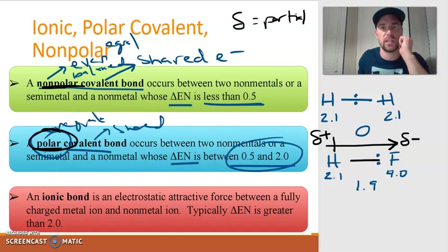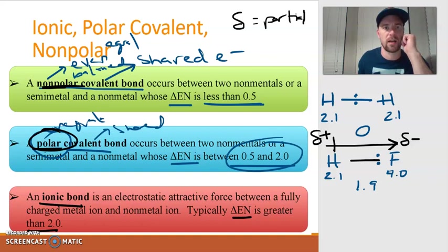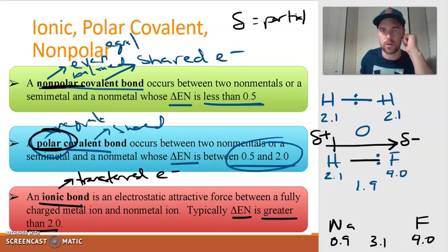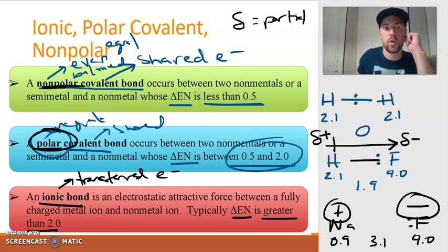If the electronegativity difference is 2.0 or greater, the bond is ionic — electrons are not shared, they are transferred. In the case of sodium bonded to fluorine, sodium has an electronegativity of approximately 0.9 and fluorine is 4.0 — a difference of 3.1, which is greater than 2.0. The electrons are completely transferred to fluorine, making fluorine the negative ion (anion) and sodium the positive ion (cation). This is what an ionic bond is — a bond between a cation and an anion.